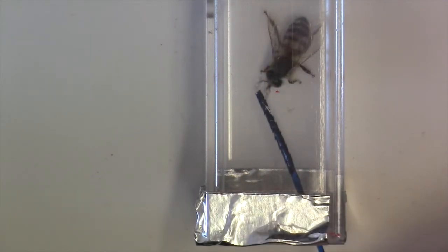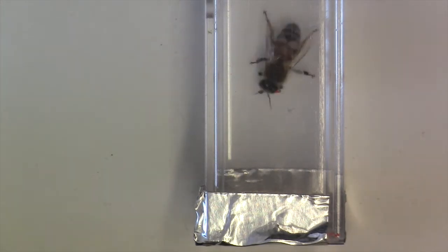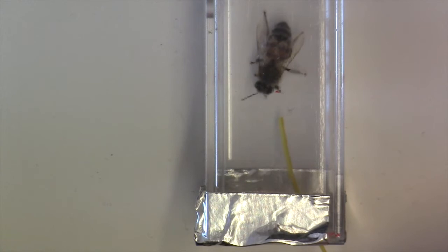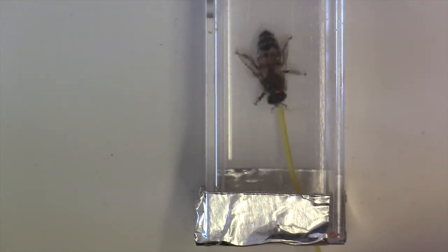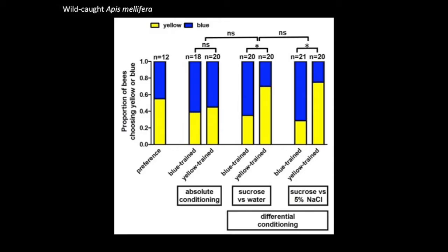Here's a honeybee being tested using the differential conditioning procedure. A bee is presented with a rewarding blue strip and then a yellow strip containing water. You can see that, especially early on in trials, wild bees would drink the water as well as the sucrose. As with the lab-reared Bombus impatiens bumblebees, we found that the wild-caught Apis mellifera honeybees did learn. But again, we didn't see strong differences between the groups in the direction predicted by learning theory. Bees learnt just as well when trained via absolute as compared to differential conditioning, and there was no difference when we used a more aversive stimulus — salt — compared to water.